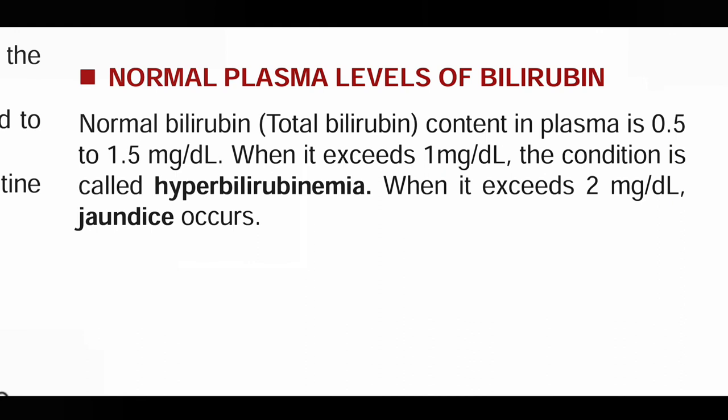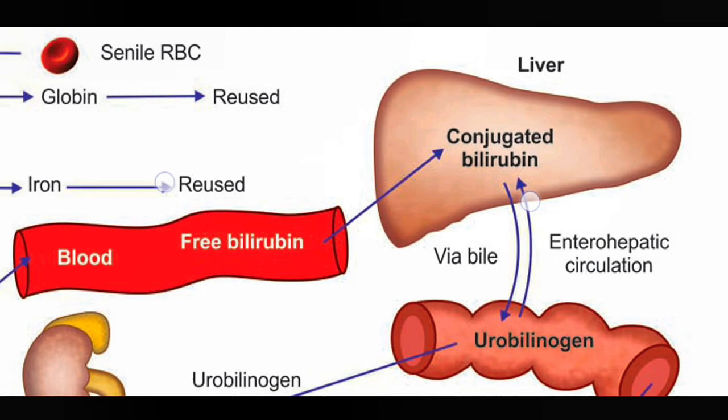The normal plasma level of bilirubin — the total bilirubin content in plasma — is 0.5 to 1.5 mg per dL. When you go to the hospital for a liver test, there is a total bilirubin count with three tests: total bilirubin, conjugated bilirubin, and unconjugated bilirubin.